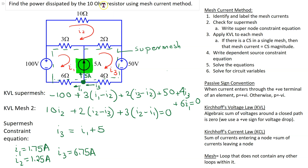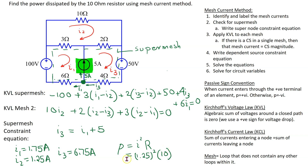The final step is to solve for the circuit variables. Here we need to find the power dissipated by the 10-ohm resistor. Using P equals I-squared times R, the current through this resistor is i2 equals 1.25 amps. So the power is 1.25 squared multiplied by 10, which gives 15.625 watts. Thus the 10-ohm resistor dissipates 15.625 watts, and this completes the solution to this example.